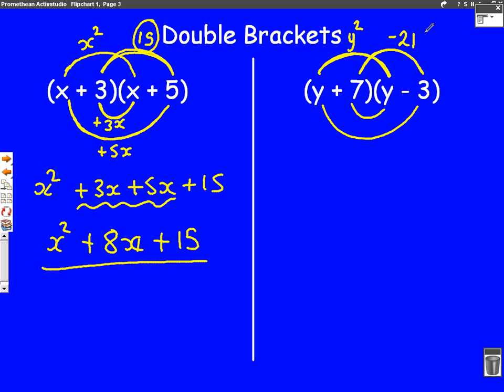Now let's have a go to the bottom ones. This one here, 7 times y. That will be plus 7y. And then the bottom one, y times minus 3. Well, 3 times y would be 3y. But it's a minus this time.